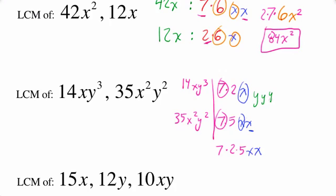And lastly, we need the y's. Here's y times y times y, and here's y times y. Again, you want to circle what's in both, there's a y, here's another y, but we need that third y.